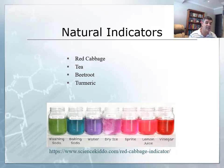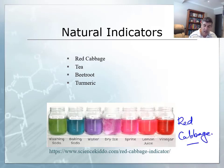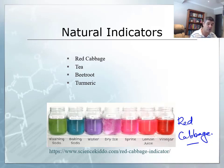Here's an example of both some different types of indicators that you may use, and also some results that were put together with red cabbage. It shows quite a range of different colors, and if our indicators are going to be useful, they need to be able to tell us the difference between acidic solutions, neutral solutions, and basic solutions.